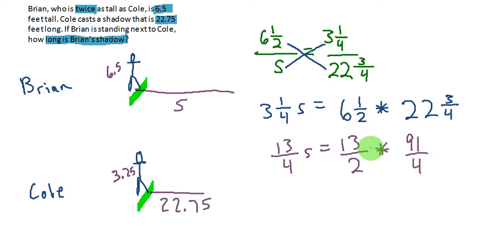Okay, our next step. Whenever we multiply fractions, all you have to do is multiply straight through. So it's straight through on the top, straight through on the bottom. We have 13 over 4 times S is equal to 1183 over 2 times 4 is 8.